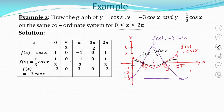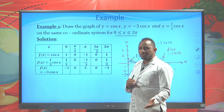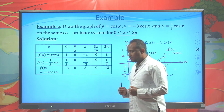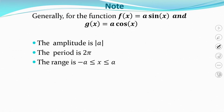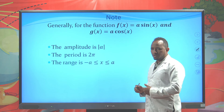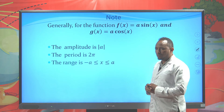Therefore, for functions of the form a·sin(x) and a·cos(x), the amplitude of the graph is the absolute value of the coefficient a, the period is 2π, and the range varies from -a up to a. Now let's continue to the next part: the graph of f(x) = sin(kx) and g(x) = cos(kx).